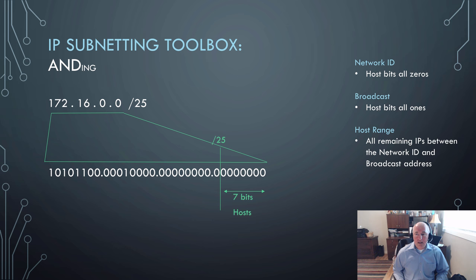So all we do is write all zeros for the hosts and all ones for the host. Notice the bits to the left of the slash 25 have remained unchanged. Those are our network bits now and we don't touch them.